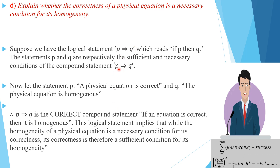So with the compound statement 'p implies q' — if the equation is correct then it is homogeneous — we conclude that homogeneity is a necessary condition for correctness, and correctness is a sufficient condition for homogeneity. Therefore, whenever a particular equation is homogeneous, since homogeneity is a necessary condition for correctness, the equation is possibly correct. And whenever an equation is correct, since correctness is a sufficient condition for homogeneity, it is already sufficiently homogeneous. That is why the 2020 Paper 1 answer was 'homogeneous, and then possibly correct.'